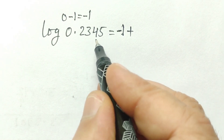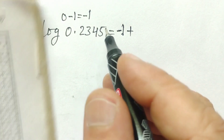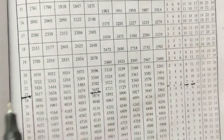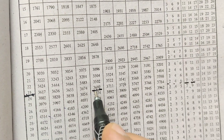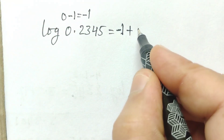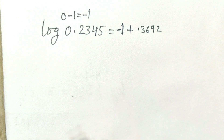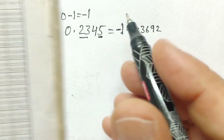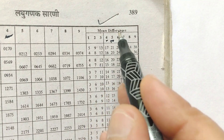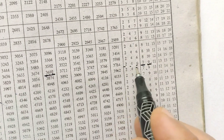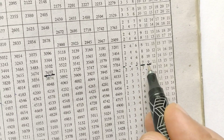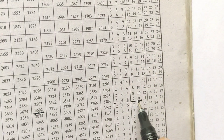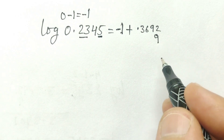Now we will see what is the value of the 4th column for row 23. The value of the 4th column is 3692. So we will write 0.3692. Now for row 23, the mean difference in the 5th column: columns 1, 2, 3, 4, 5 — the mean difference in the 5th column is 9.